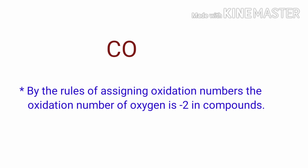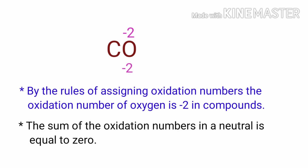By the rules of assigning oxidation numbers, the oxidation number of oxygen is minus 2 in compounds. We can write the oxidation number of the element above its symbol and the total number of the oxidation number of the atoms below its symbol. As per the rule, in a neutral compound, the numbers along the bottom must add up to 0.